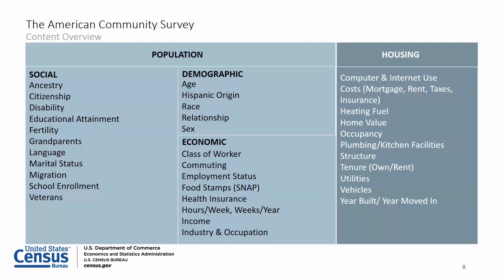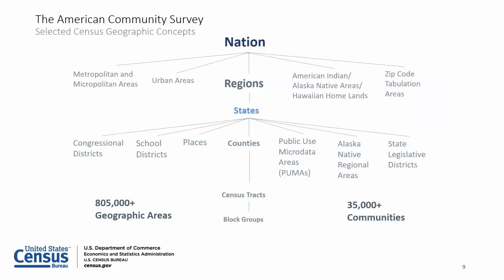Each question on the ACS is used for federal and state government programs. These topics are used to produce more than 1,000 tables for local communities resulting in more than 11 billion estimates each year. The ACS provides data for more geographies on an annual basis than any other household survey — over 13,000 geographies for one-year estimates, 15,000 for one-year supplemental estimates, and 776,000 geographies for the five-year estimates.